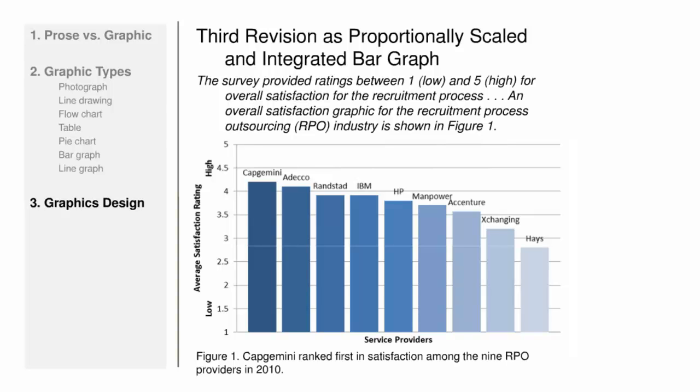Finally, the writer integrated the graphic into the document by giving it a number — the caption now starts with Figure 1 — and by mentioning that graphic by number in the prose so readers know when they should look at it.